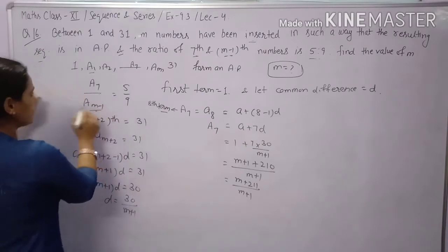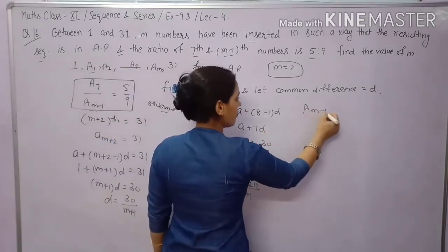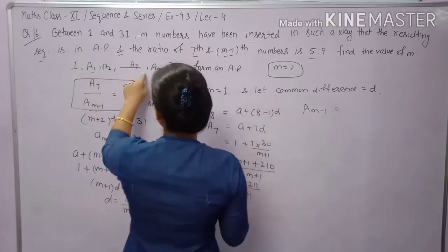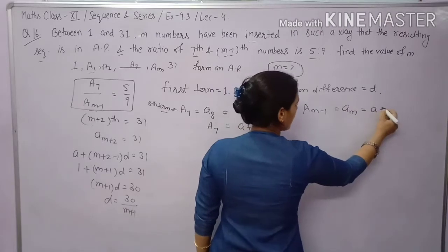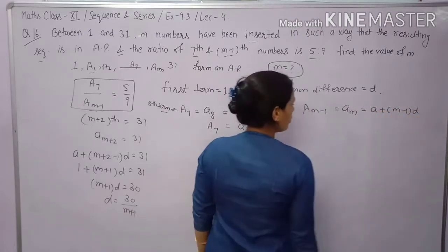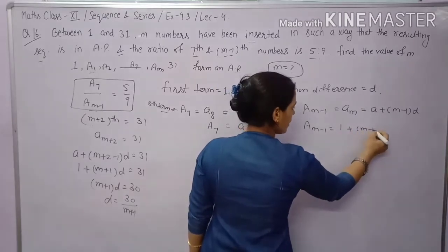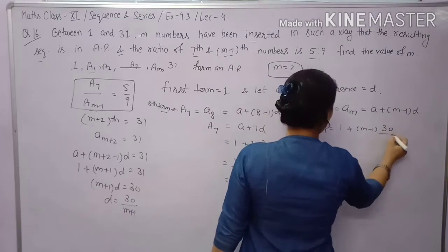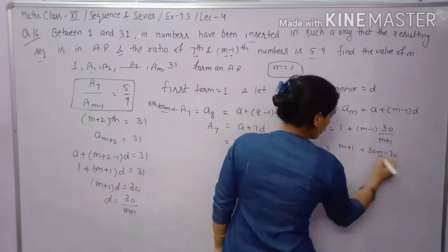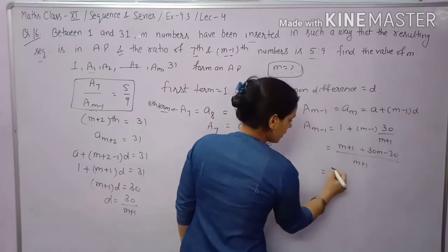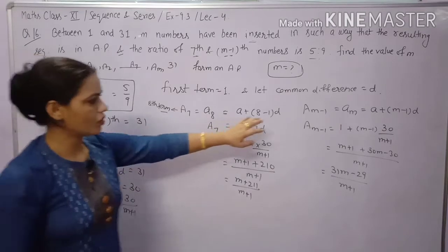Now find A(M-1). This term is at position M-1 in the sequence. Using the formula: A(M-1) = A + (M-1-1)·D = 1 + (M-1)·(30/(M+1)). Solving: (M+1 + 30M - 30)/(M+1) = (31M - 29)/(M+1).